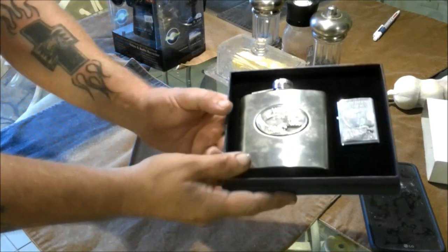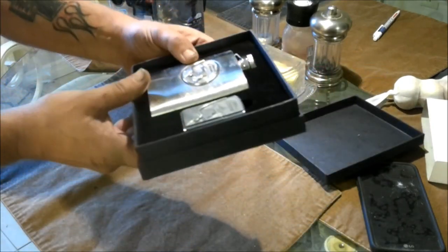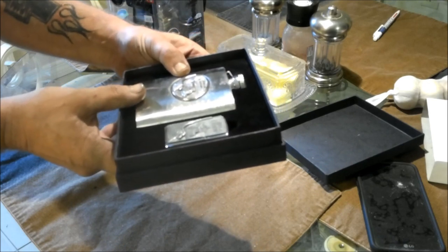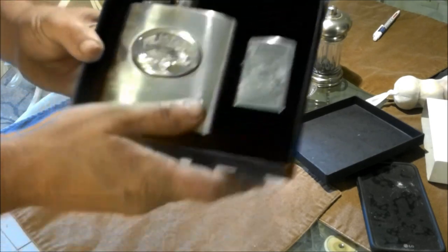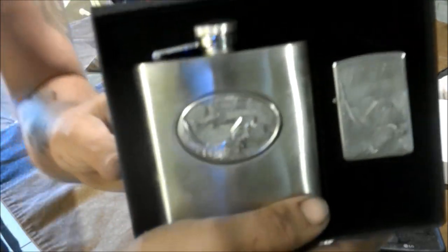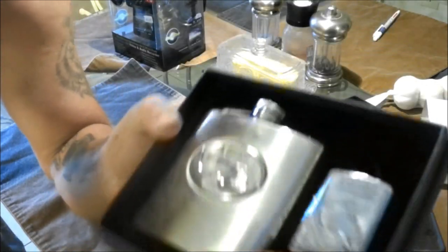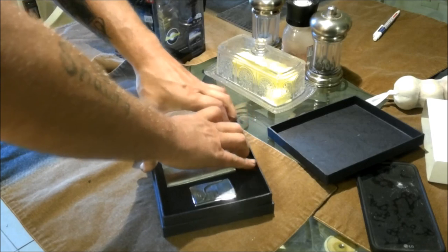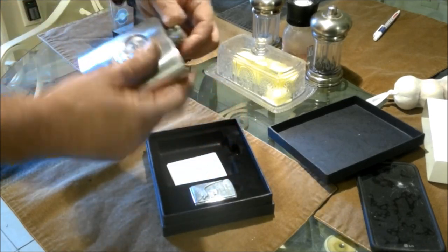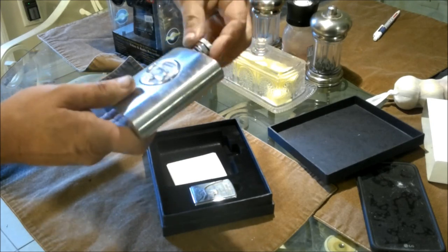We got a flask here. Now I wasn't too interested in the flask. It is very cool though. It does say American Trucker on it. It's got a picture of a semi on it and the lighter was interesting. Because I mean, how often am I going to use this flask? But it's still pretty cool. It's stainless steel. So what the heck, right?